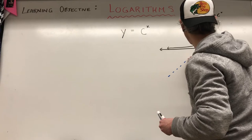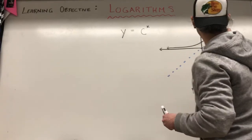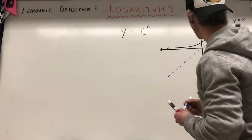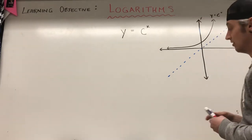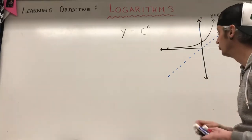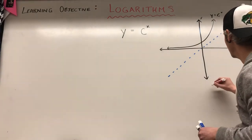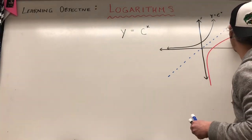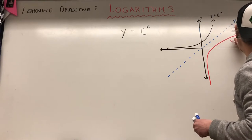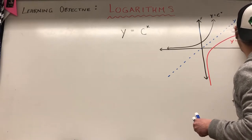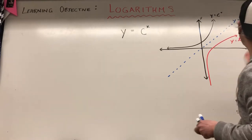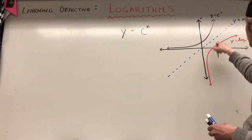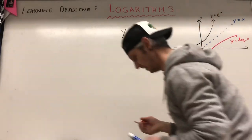We know now that when we take the inverse of an exponential function it reflects across y equals x, and that inverse is actually our logarithmic function. It will end up looking something like this, where this is y equals log base c of x. This is our logarithmic function; this is our exponential function.